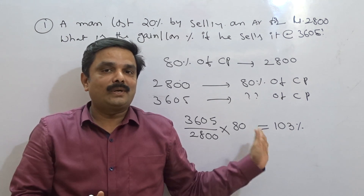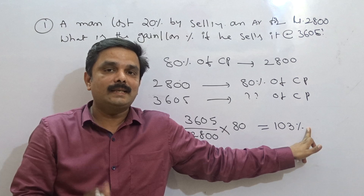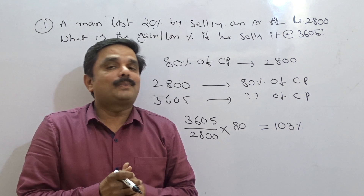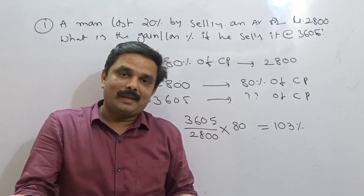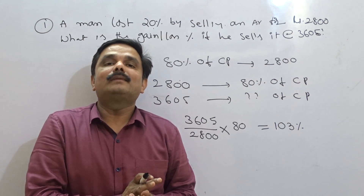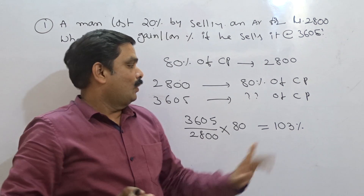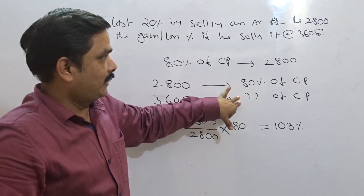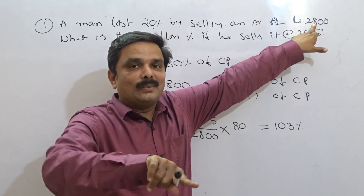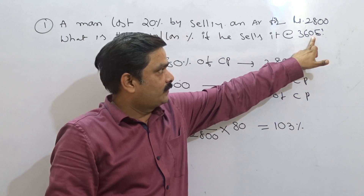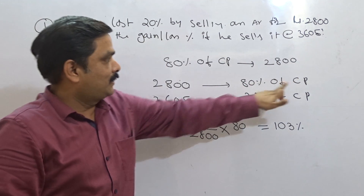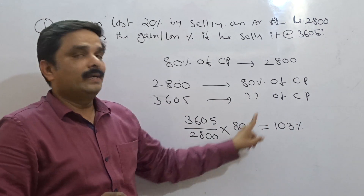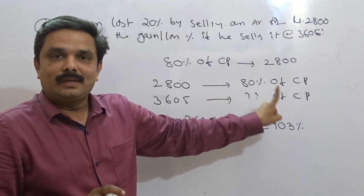When it is 103% of the cost price, obviously there is a profit in this transaction, and that profit is directly 3%. In profit and loss, cost price is always taken as 100%. So 103% means a 3% profit. If the answer were 97%, it would be a 3% loss. This is the method to always use in competitive exams.